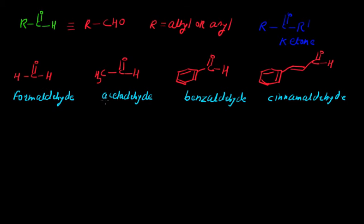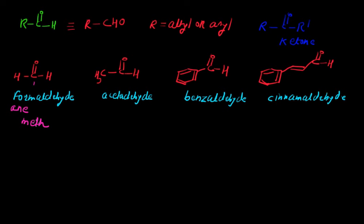Formaldehyde, acetaldehyde, benzaldehyde, and cinnamaldehyde are all common names. We can also give systematic names to all these aldehydes using the IUPAC nomenclature system. For formaldehyde, we count carbon number 1 — there is a total of 1 carbon atom, so the prefix is 'meth'. In alkanes we normally end with '-ane', but for aldehydes we replace the '-e' with '-al', giving 'methanal'. So the IUPAC name for formaldehyde is methanal.